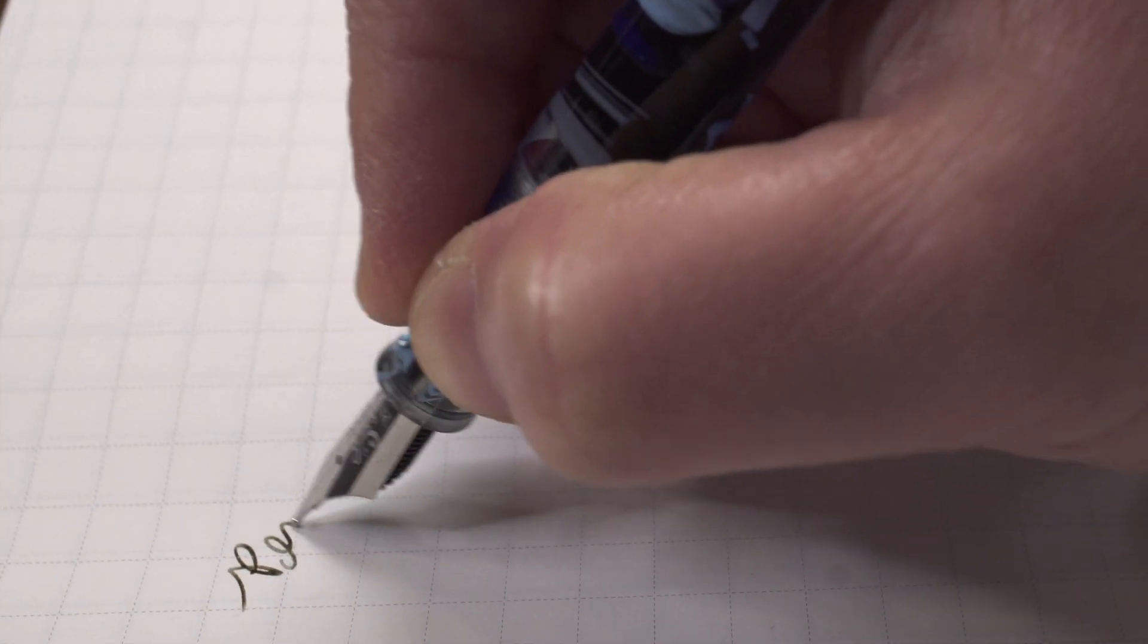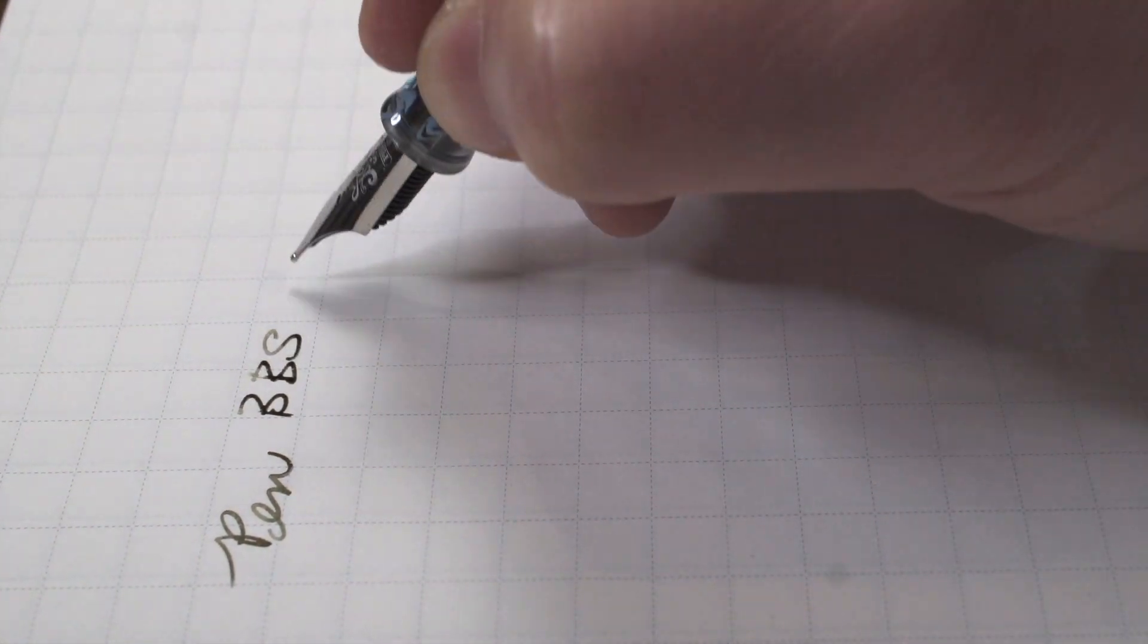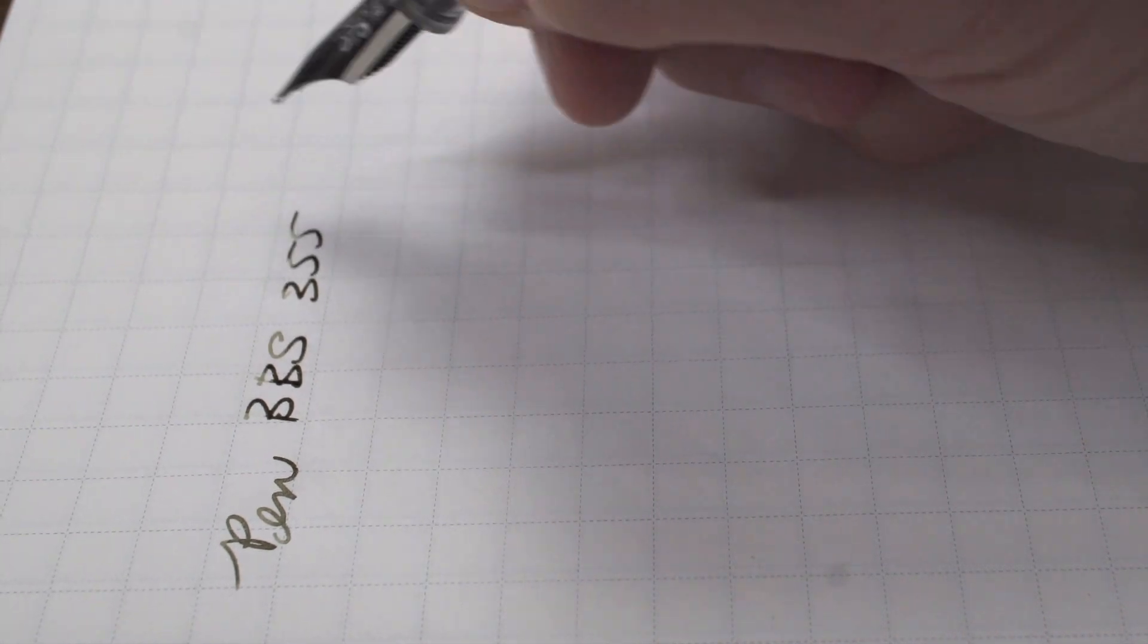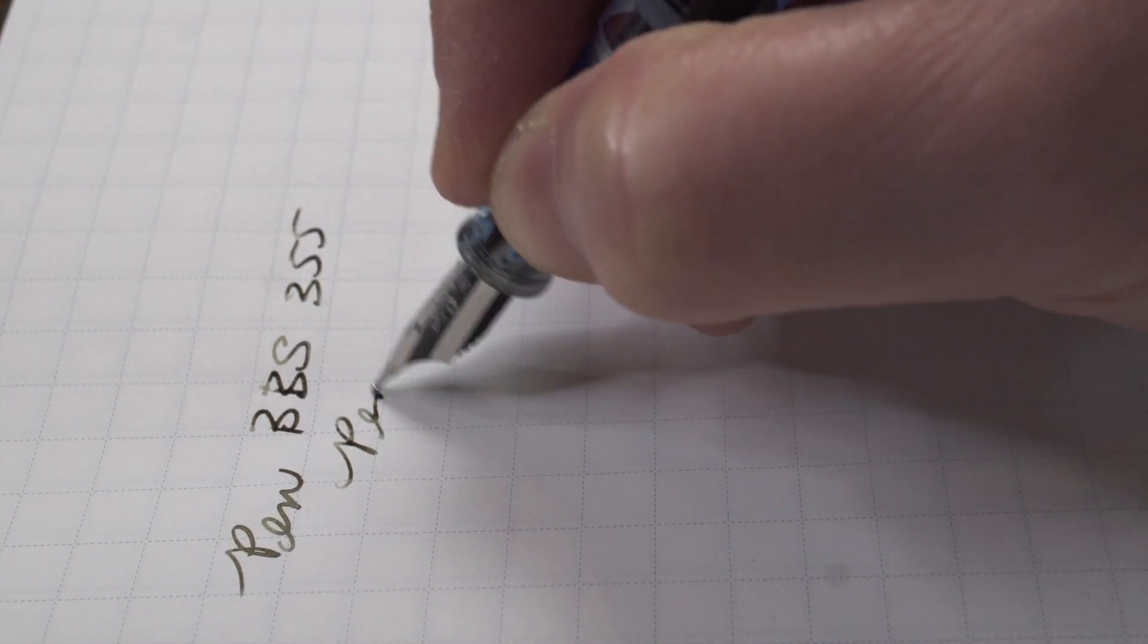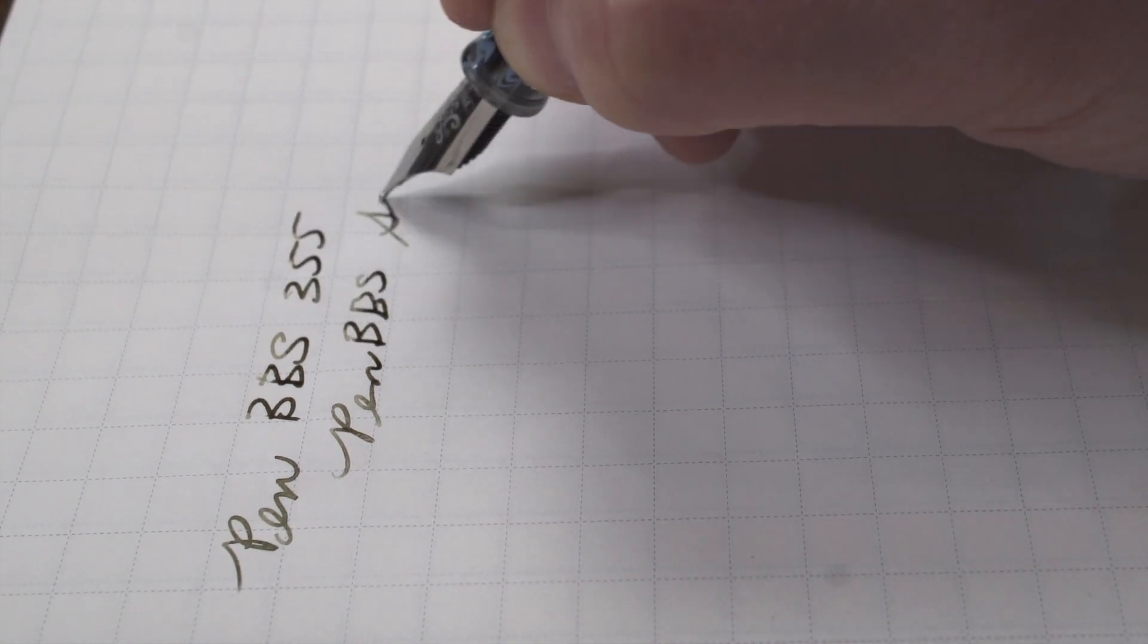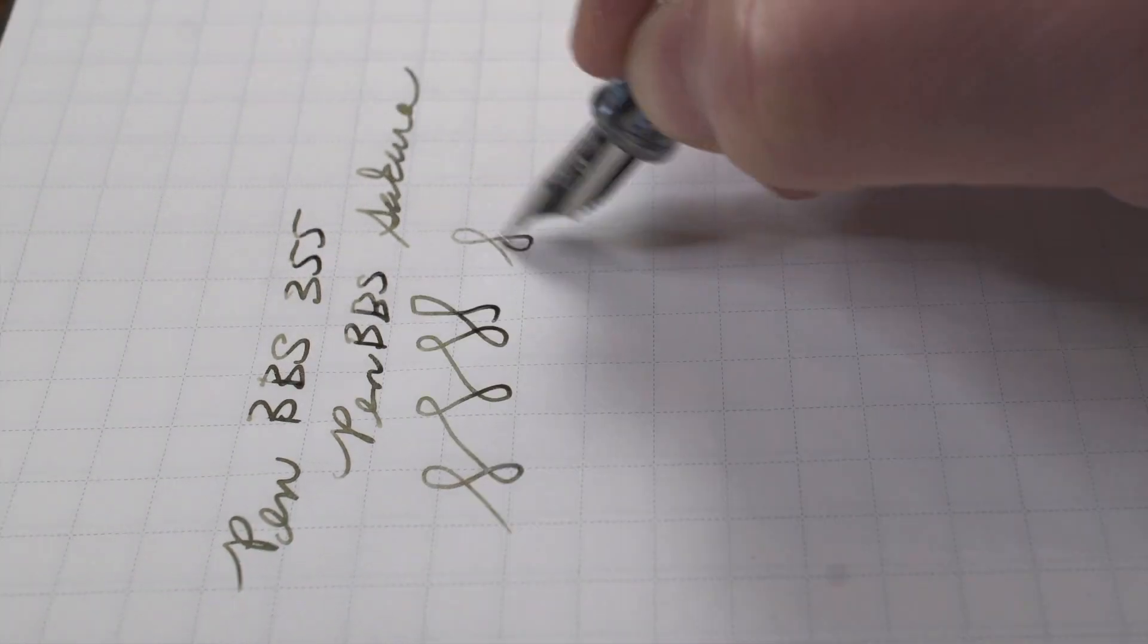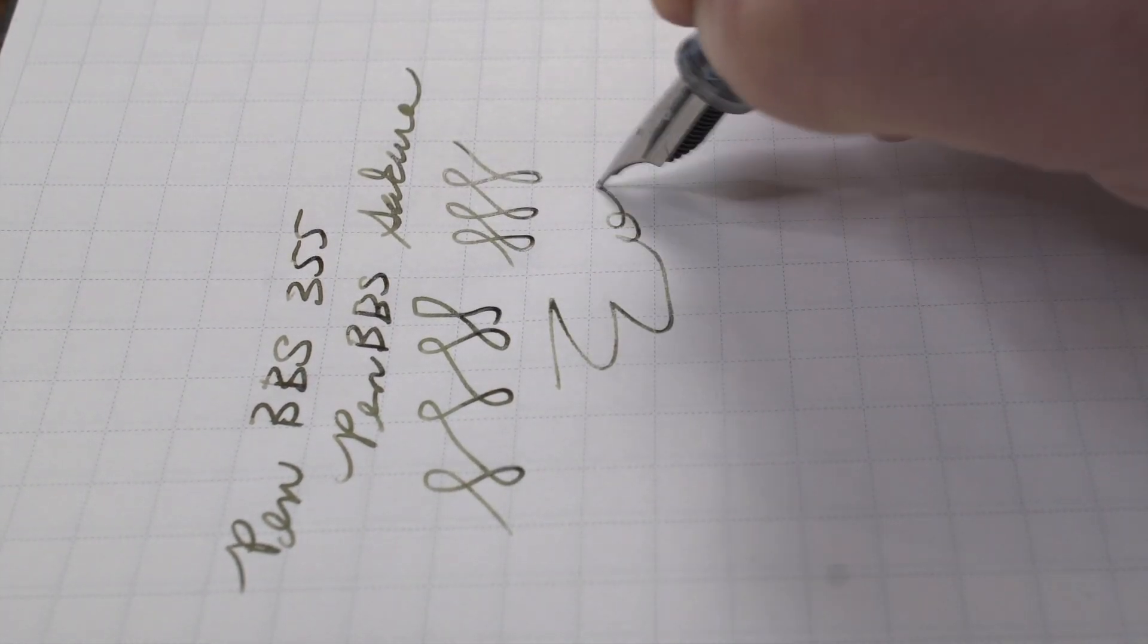The pen writes nice and smooth, even though I did change out the nib. It writes pretty much well, like every other PenBBS nib. And this medium nib has a really good flow. It looks like this ink might have some really interesting shading, and it pretty much well keeps up with anything I do.